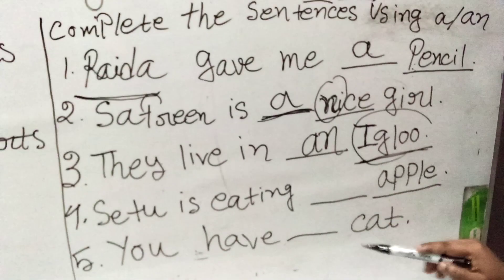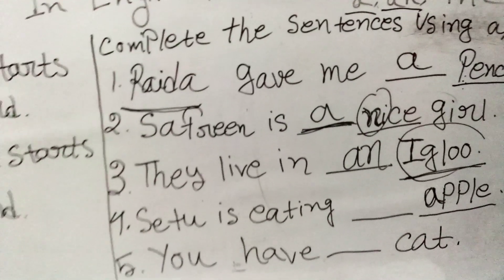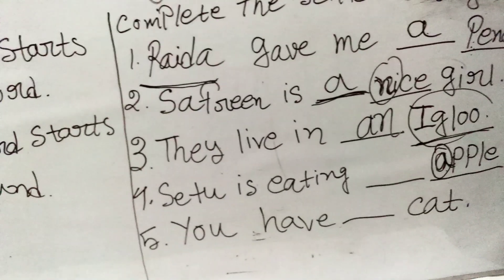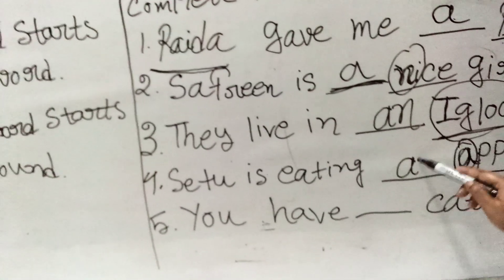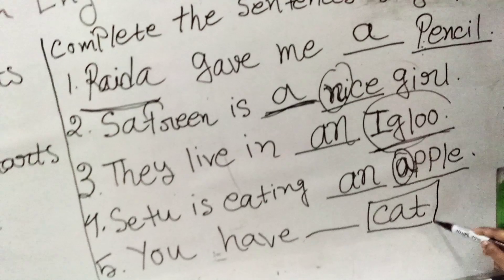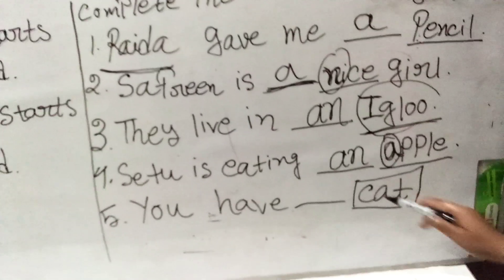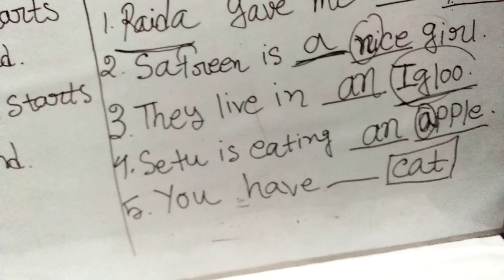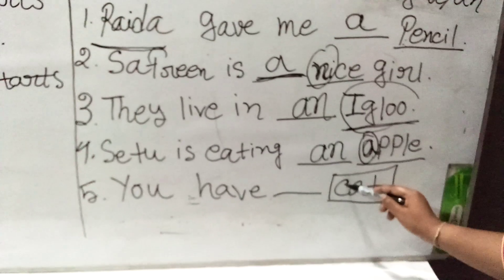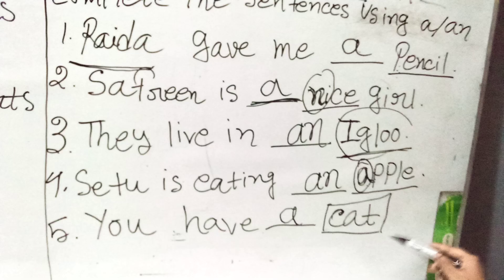Then: '___ cat.' After the gap, the word is 'cat'. The first letter is 'c'. Is 'c' a vowel? No — a, e, i, o, u are the vowels, so 'c' is a consonant. Before a consonant we put 'a', and before a vowel we put 'an'. Since 'c' is a consonant, we put 'a' here. In this way, you work out the answers in your exam.